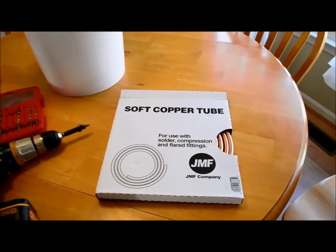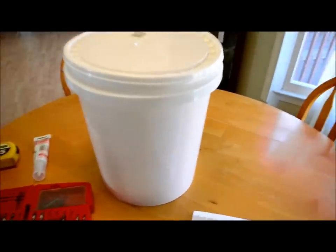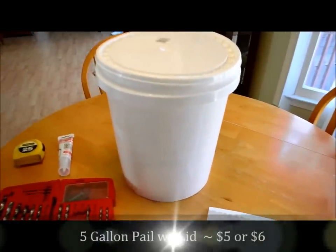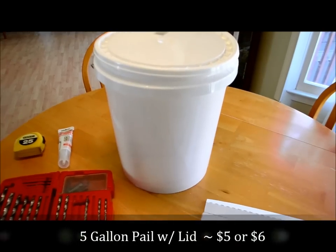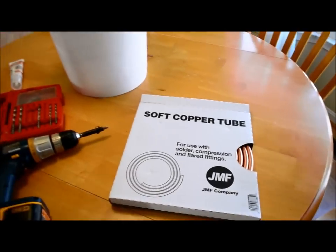A few key components you'll need to get this done are a 5-gallon pail. This can be picked up at any big box store for about $5 or $6. Don't forget the lid. That just helps store stuff.